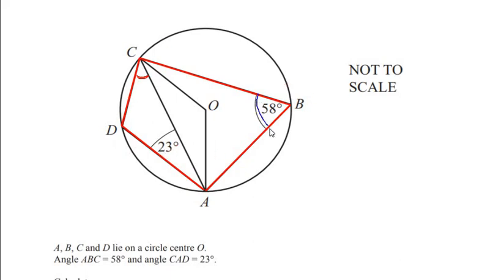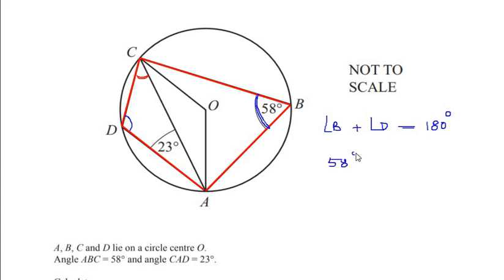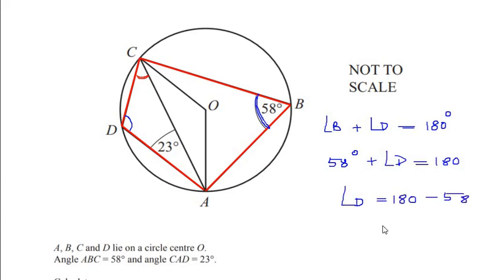Angle B is opposite to angle D, so we can add them to get 180 degrees. Since angle B is given as 58 degrees, we substitute: 58 plus angle D equals 180 degrees, giving us angle D equals 180 minus 58, which is 122 degrees.